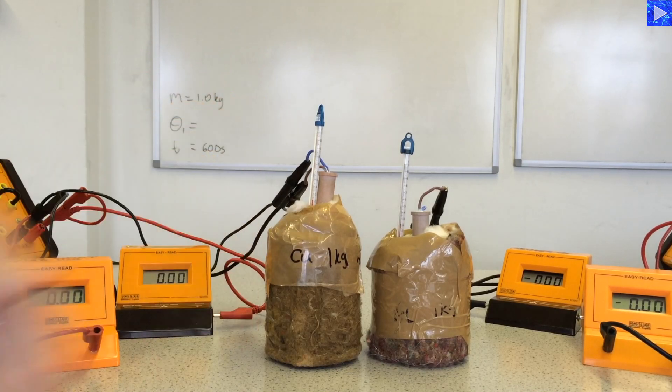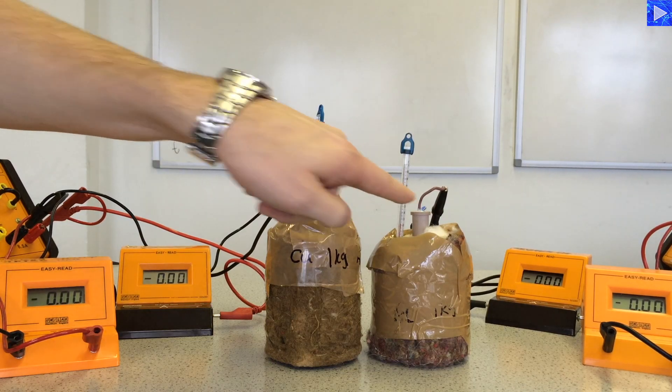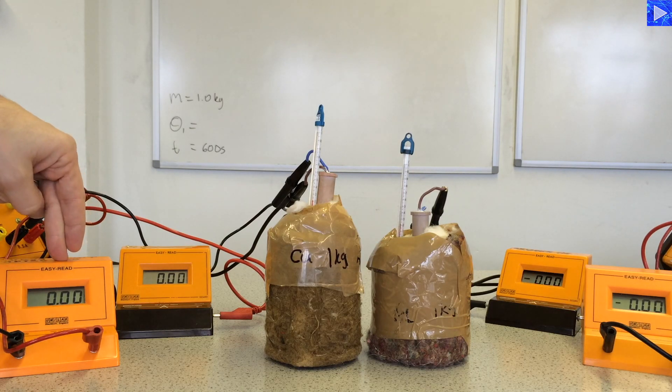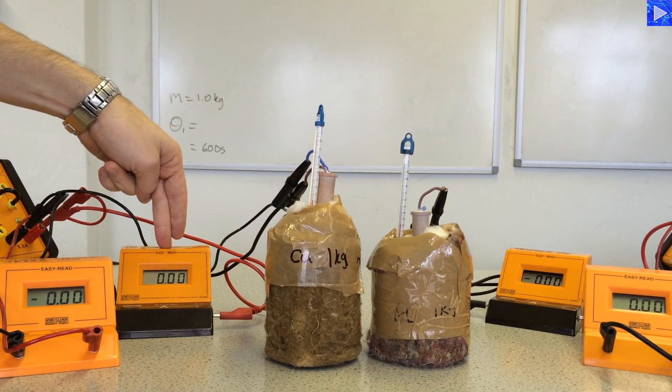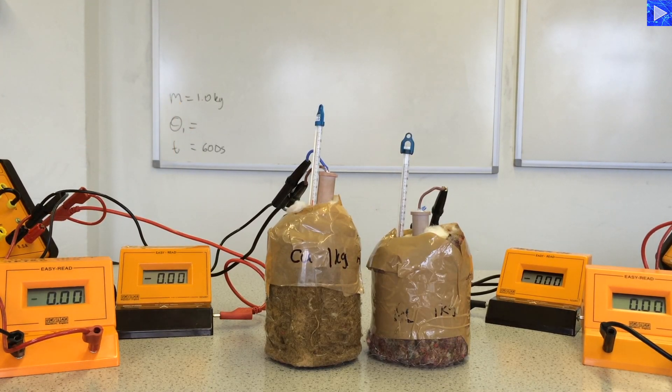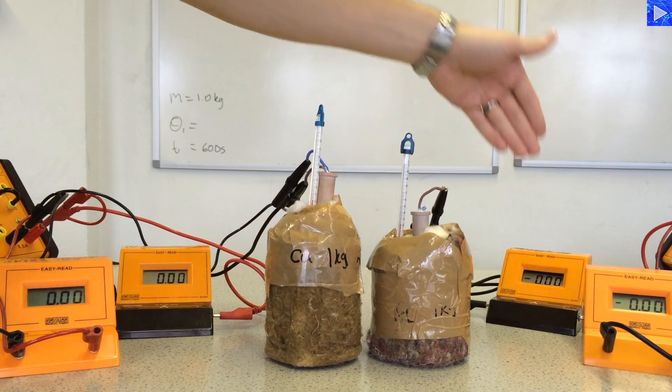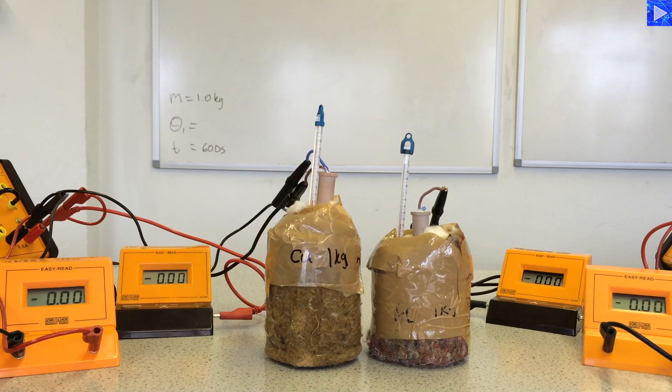They are surrounded by lagging which insulates them from the surroundings to minimize heat loss. They have an immersion heater inside them connected to a power supply. There is a voltmeter across the immersion heater and an ammeter so I can determine the voltage across and the current through the heaters. This is for the copper block here and that is the voltmeter and ammeter for the aluminum block. They also have a thermometer inside so I can measure the starting temperature and the final temperature.